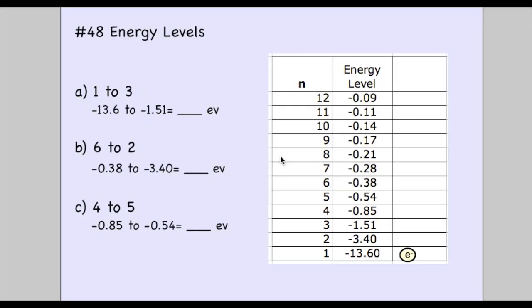So number 48. Using this table really helps bring it to life. I like to think of it as a manhole. If this electron is at the ground state, it's 13.6 eVs deep. And so what they're asking you is, if it goes from 1 to 3,